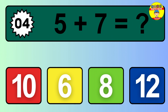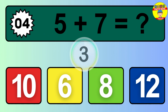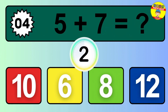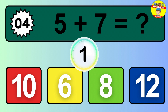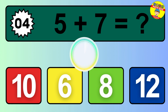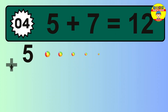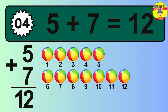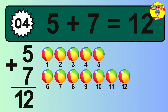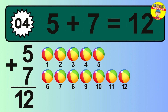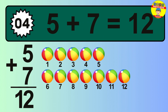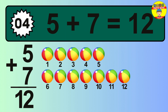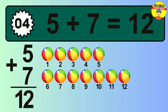Question 4. 5 plus 7 equals what? So the answer is 5 plus 7 is 12. Let's count it: 1, 2, 3, 4, 5, 6, 7, 8, 9, 10, 11, 12.